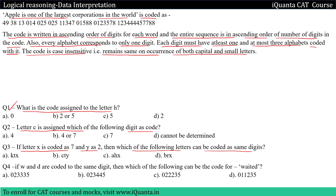Now how to compare? In this sentence given to us, we have two-letter words: 'is', 'is', 'of', 'in'. And the two-digit numbers are 49, 38, 13. So we have 'is', 'of', and 'in', and the digits they correspond to can be 49, 38, and 13. We do not know which digit will be assigned to which alphabet — I'm just writing down the possibilities.